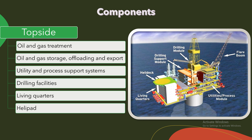The topside can include one or more of the following modules. First, oil and gas treatment — the purpose of oil and gas processing is to separate, remove, or transform various components to make the hydrocarbons ready for sale. Second, oil and gas storage, offloading and export. This section is designed to receive hydrocarbons produced by itself or from nearby platforms or subsea templates.